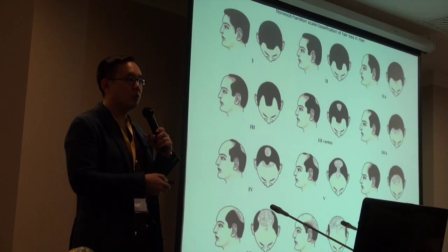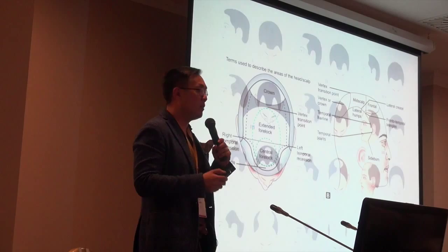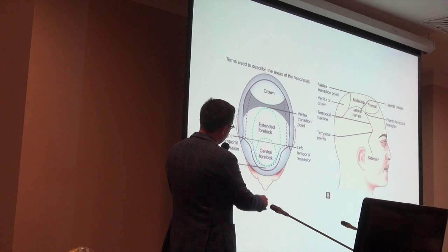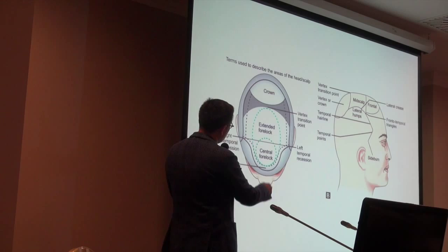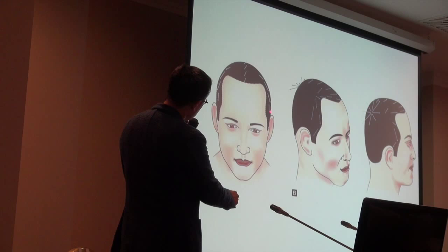The recipient sites vary based on the region. Each area is different — the central forelock, all these angles go straight forward. These cascade down. These go straight forward. And this goes in a whorl. You can see straight forward, it goes down. On the side, they slowly cascade.